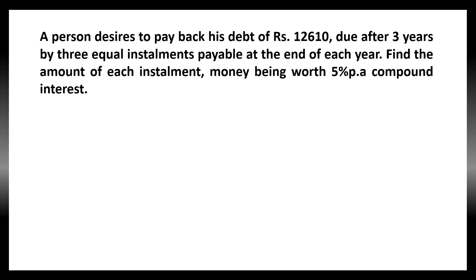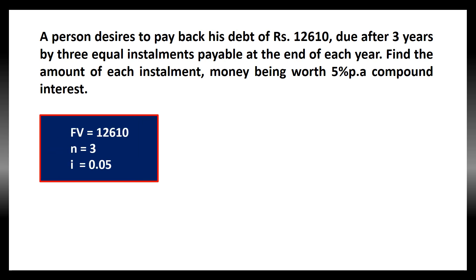Now, let us take another example. A person desires to pay back his debt of rupees 12,610 due after 3 years by 3 equal installments payable at the end of each year. Find the amount of each installment, money being worth 5% per annum compound interest. It is given that 12,610 will be due after 3 years, meaning this is the future value. Hence, FV = 12,610, N is 3 years, and the interest rate is 5% per annum, so I = 0.05. Since he is paying at the end of each year, the standard end-of-year formula is applied.